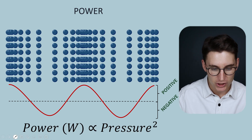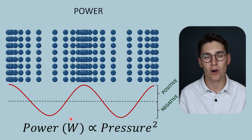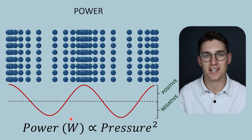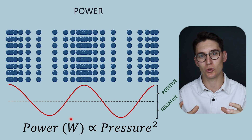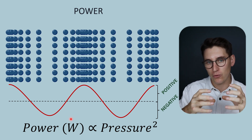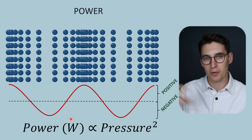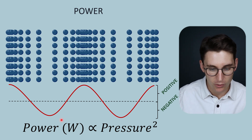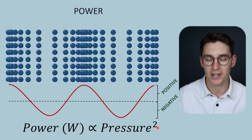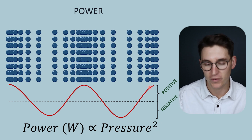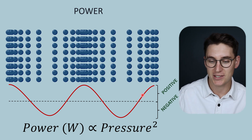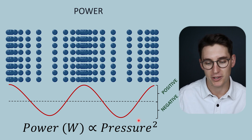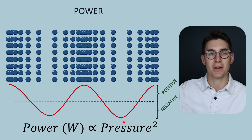The amplitude is related to the power of our beam, measured in watts — which are joules per second, or energy per second. It describes how much work is done in a tissue by those local pressure changes; a joule being the work done by a Newton of force over a distance. Crucially, power is proportional to pressure squared. So if we double our amplitude — doubling the local pressure change — we quadruple the power. As pressure increases, power increases to the power of two.